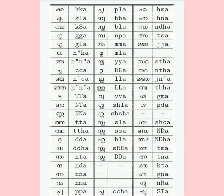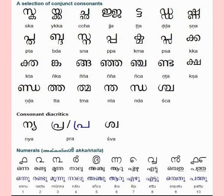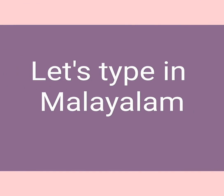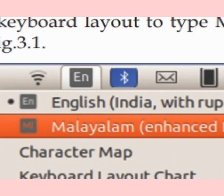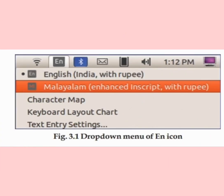Normally, when we type using a keyboard, we find English letters on the computer. How can we change the keyboard layout to type Malayalam letters? Let's type in Malayalam. Click on the icon EN that is seen on the top right position on the desktop. Choose Malayalam from the drop-down menu. Now the keyboard is ready to input Malayalam letters.